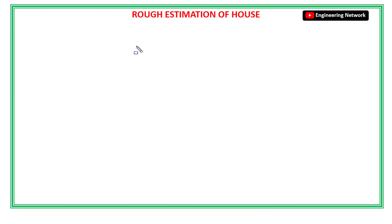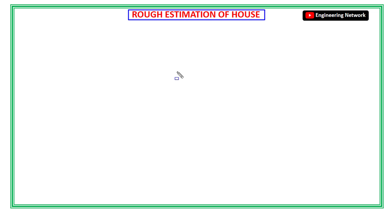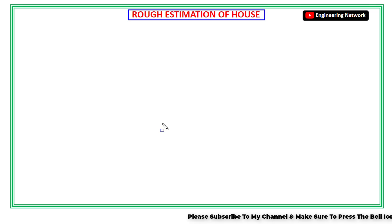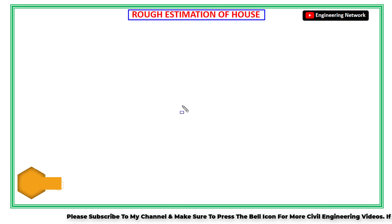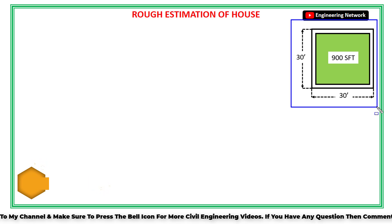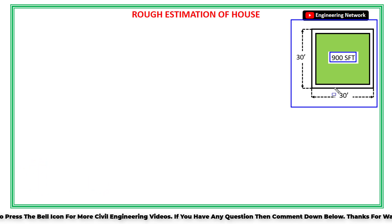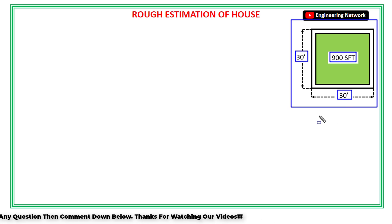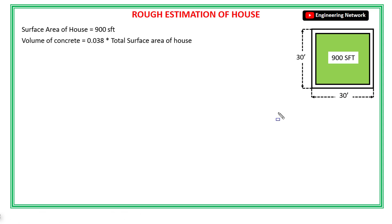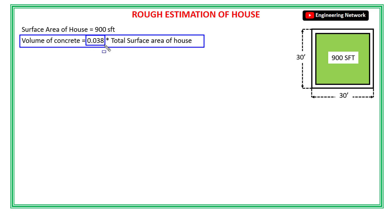Our topic is how to calculate or do the rough estimation of a house or building. A house basically consists of two things: concrete and steel. So first let's find out the rough estimation of concrete. Let's assume this house has a surface area of 900 square feet, with a length of 30 feet and width of 30 feet. According to the thumb rule for volume of concrete calculation in a house, the volume of concrete is equal to 0.038 times the total surface area of that house or building.